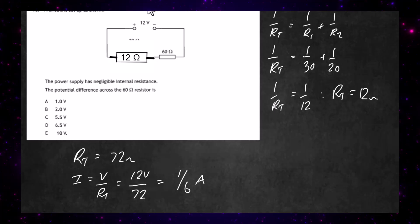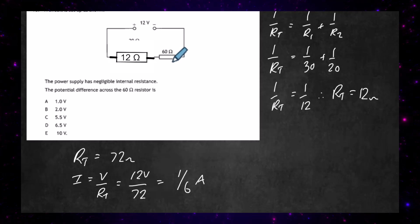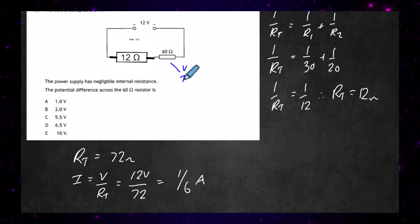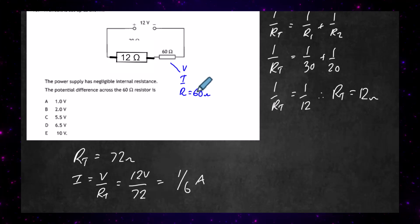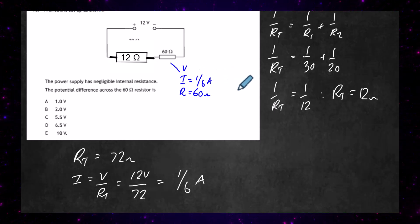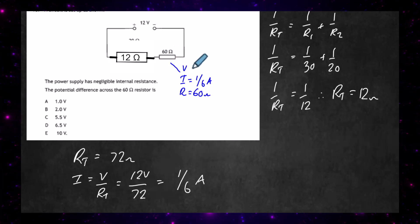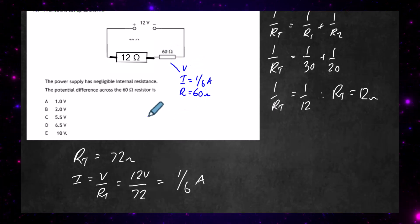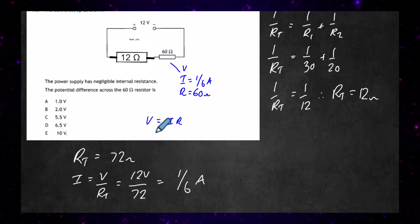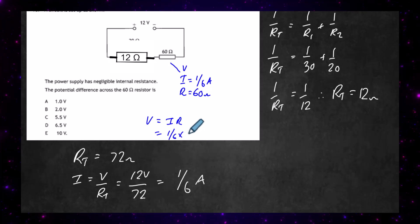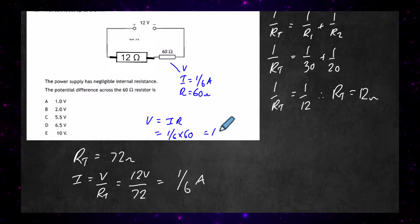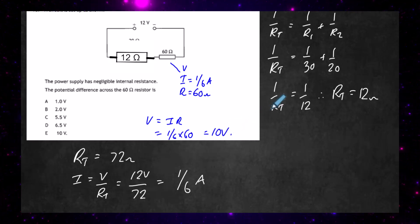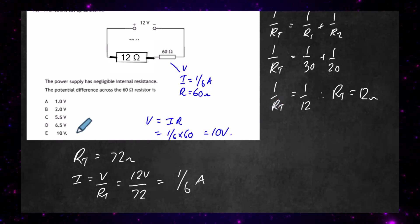Now I look at the 60 Ω resistor and fill in what I know: its resistance is 60 Ω and the current through it is 1/6 A. The potential difference across it is V = IR = 1/6 × 60 = 10 V. One sixth of 60 is 10 volts, so the answer is E — 10 volts.